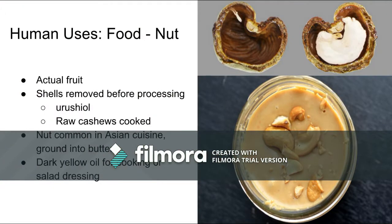What we know as the cashew nut is actually the fruit. Its shell must be removed before processing because they contain urushiol, an oily organic allergen. The cashew nut is common in Asian cuisine and also popular ground into butter. Its oil is usually used for cooking or on salads.